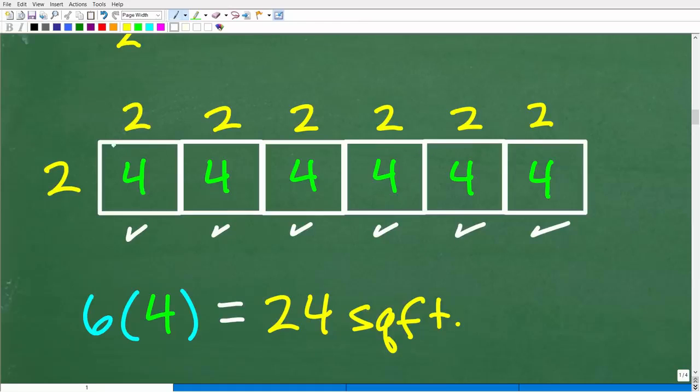So each square is two feet by two feet. How do we get the area of this square right here? Well, the area of a square is the side squared, or just the length times the width. So two times two is four. So each one of these two-foot by two-foot squares has four square feet. So that's the area here, here, here, and here, and here, and here.